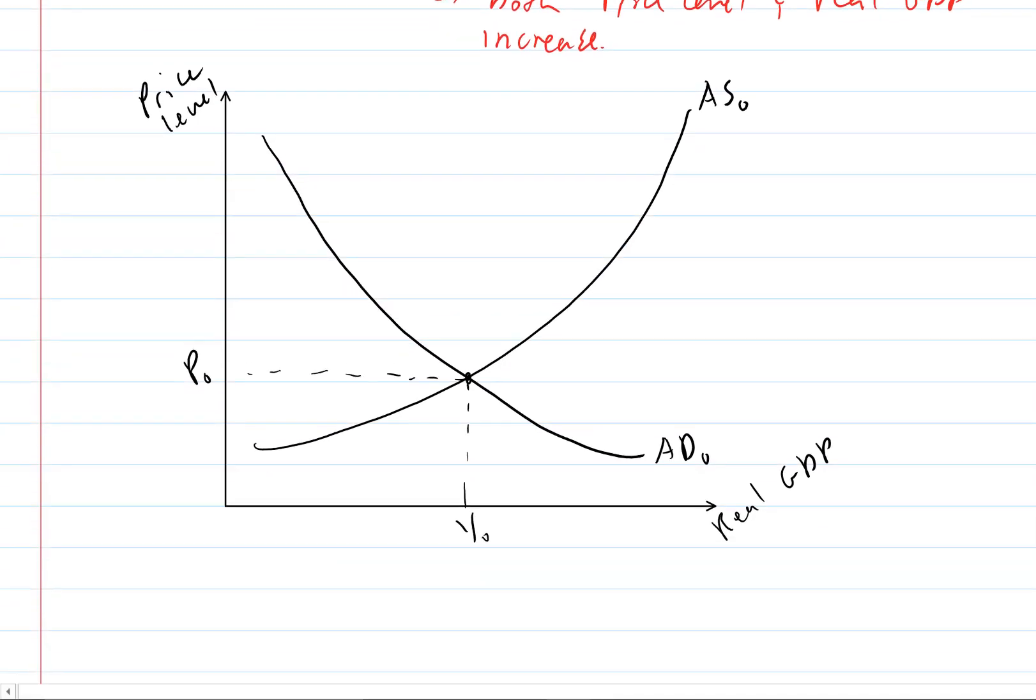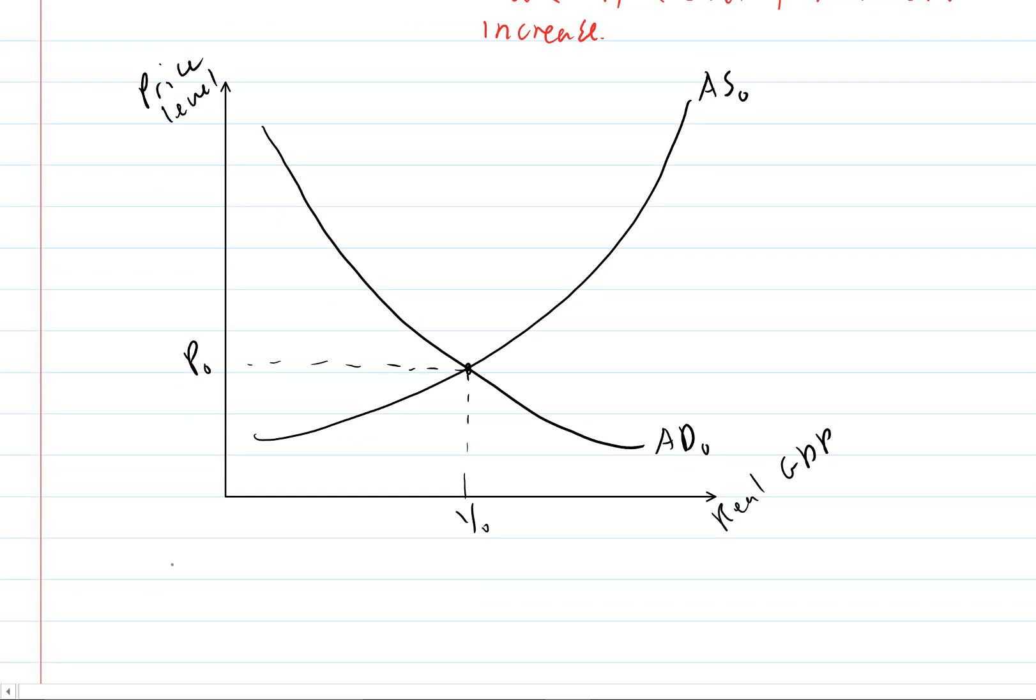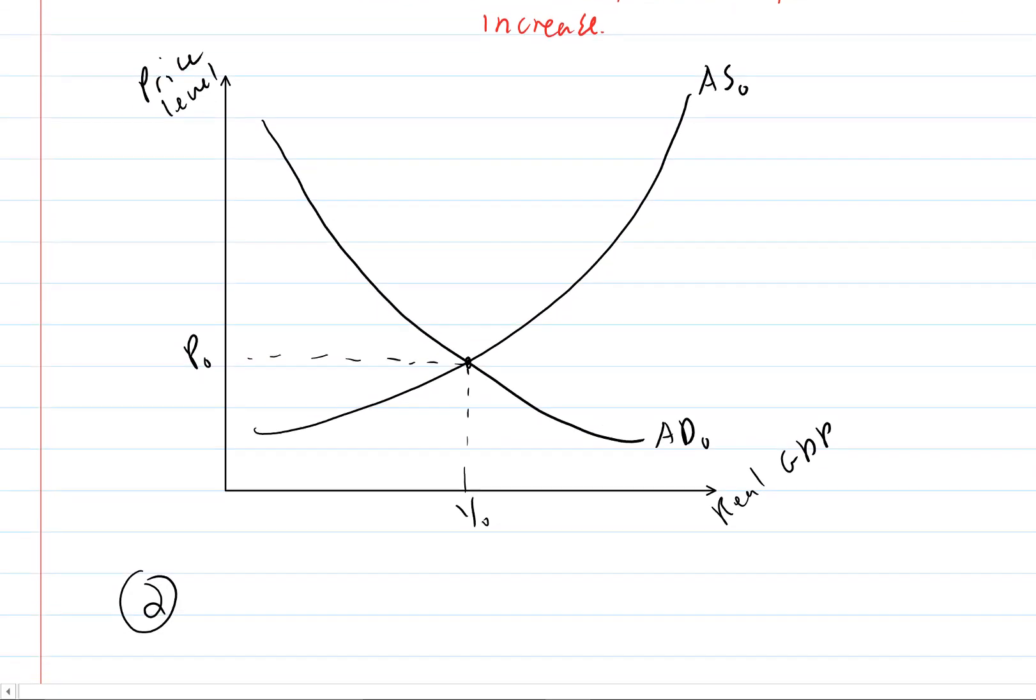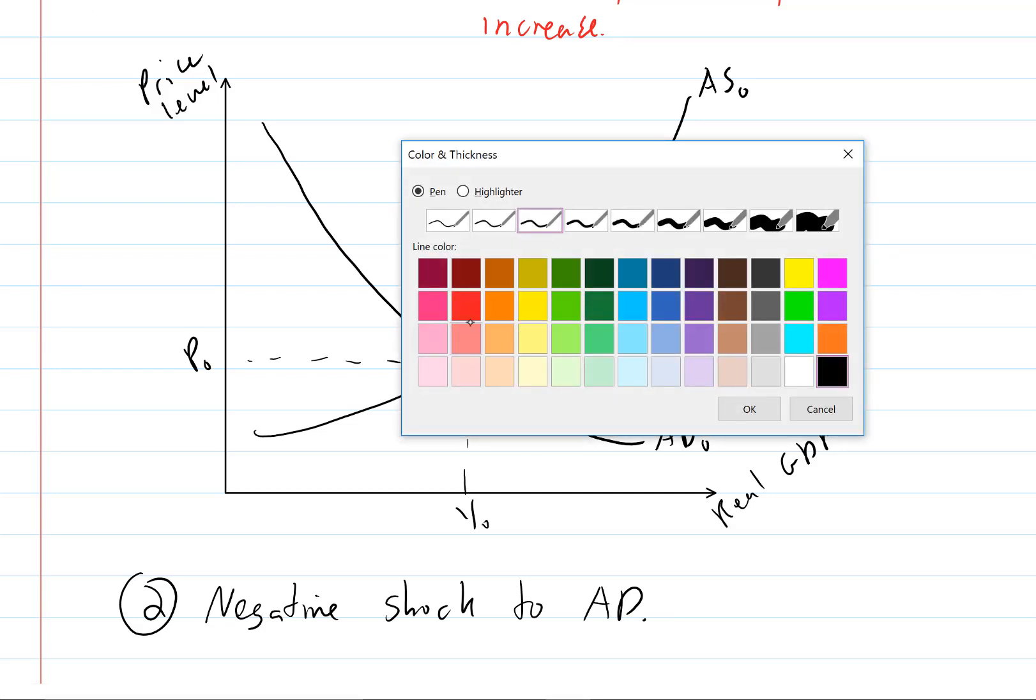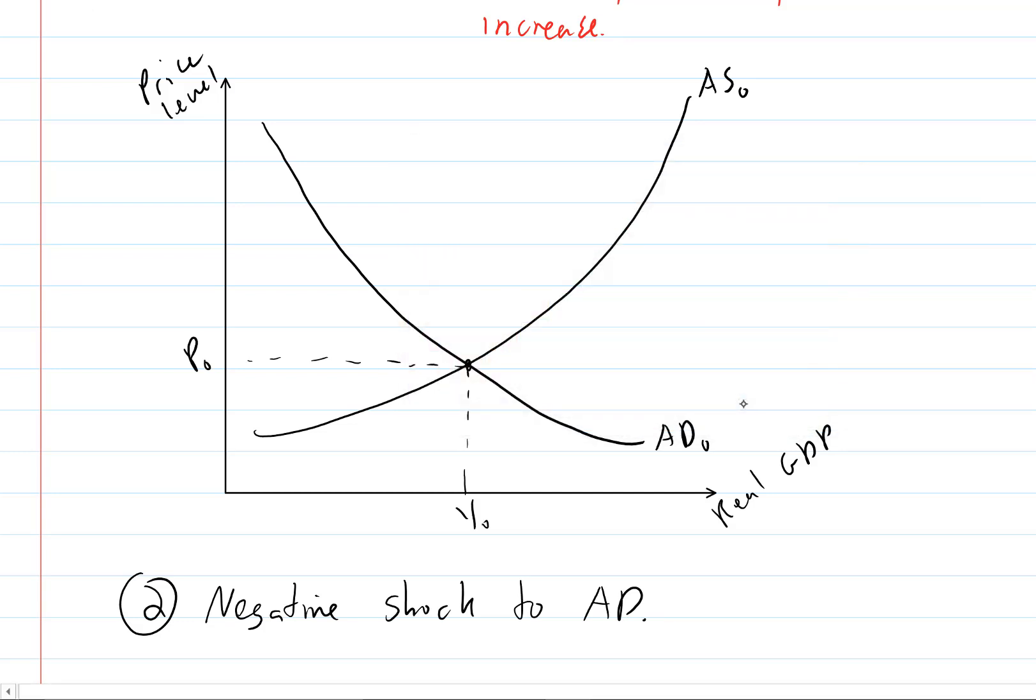Okay, so now let's look at scenario number two. This is going to be a negative shock to aggregate demand. So now let's change our color. A negative shock is going to mean a fall in aggregate demand.